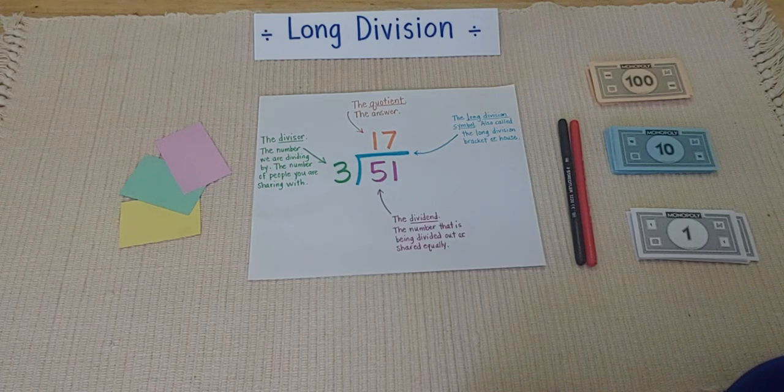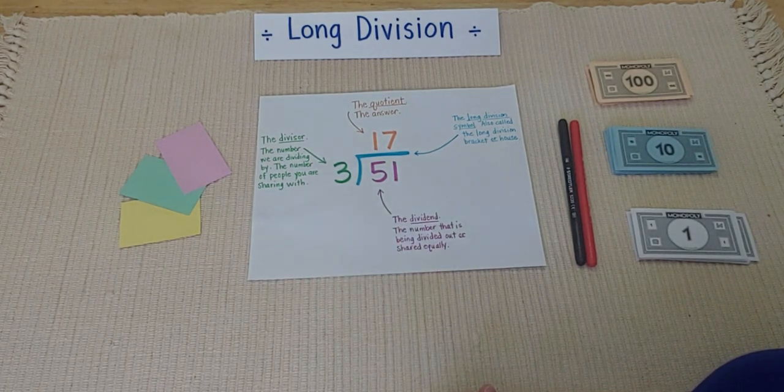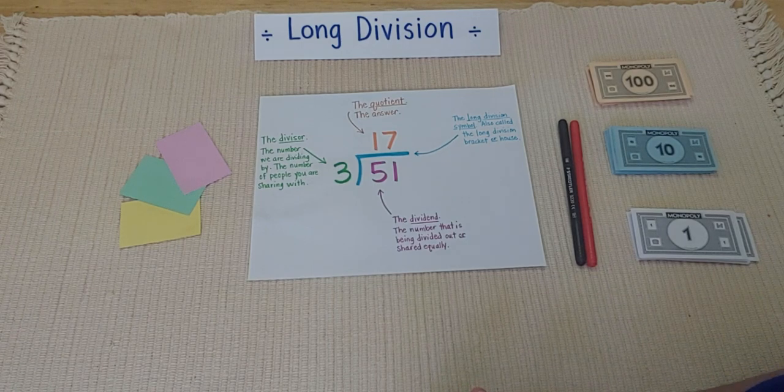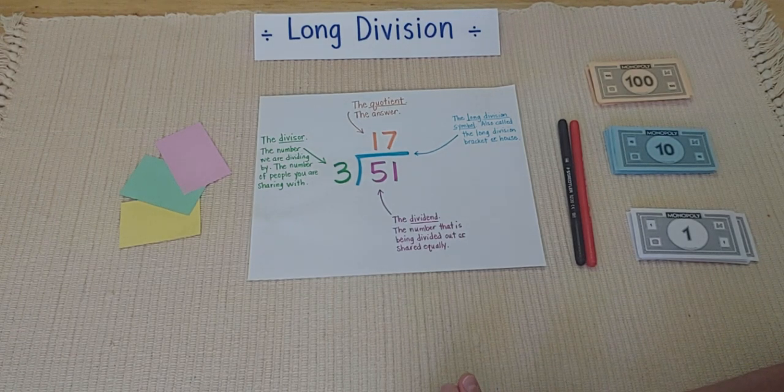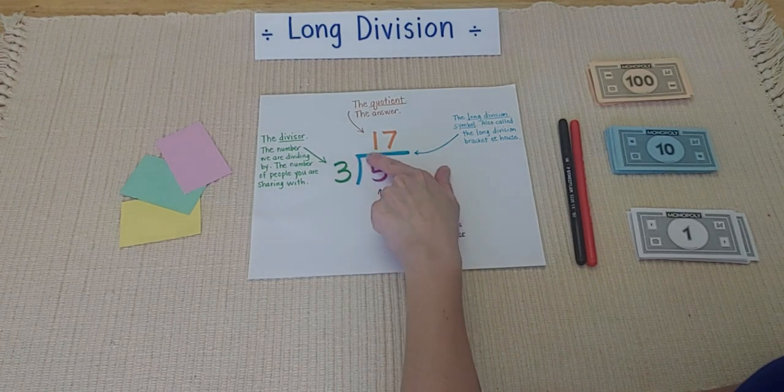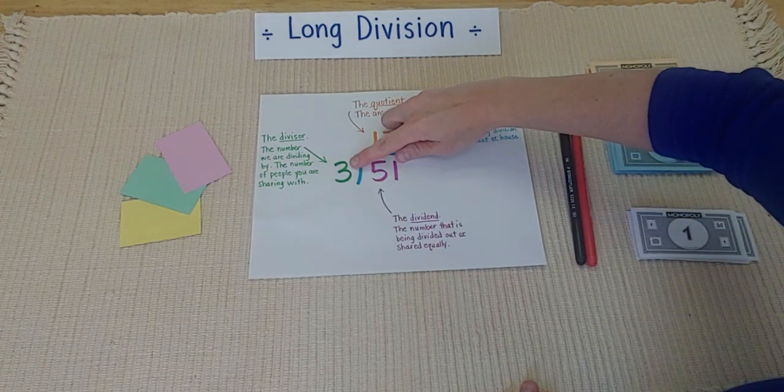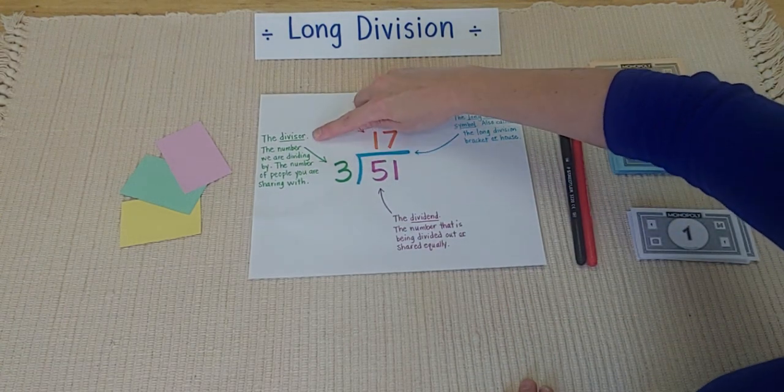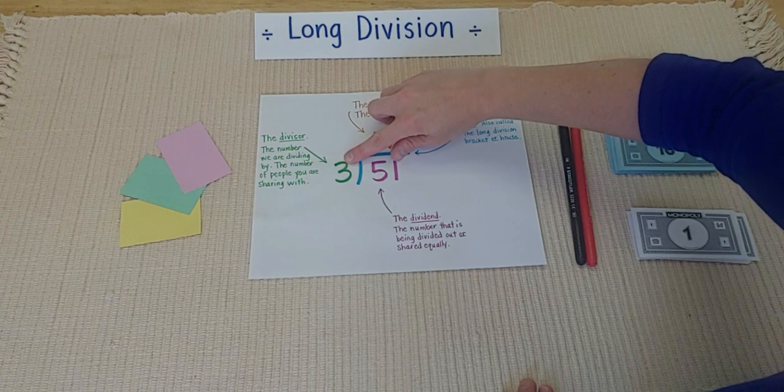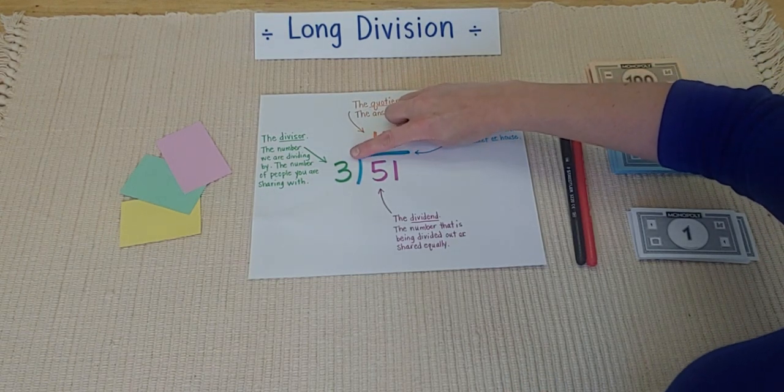So, before I show you a problem and do one with you, I want to go over the parts of a long division problem first. This problem is read by saying 51 divided by 3. And what that really means is, I'm going to use this number 3. That's my divisor. That's the number that we are dividing by. You can think of it as the number of people that you're sharing with.